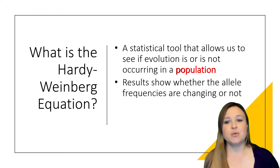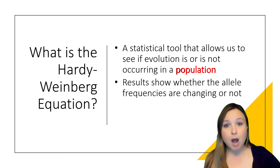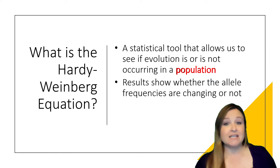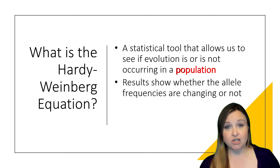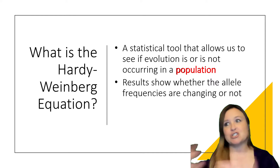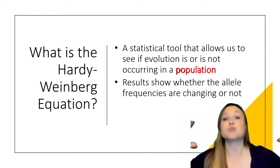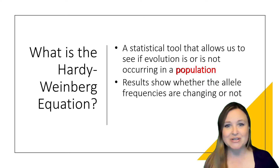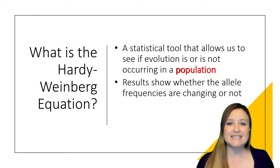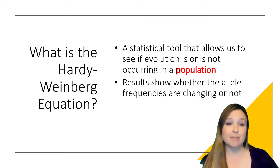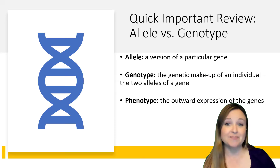Now, I want to highlight that we're talking about a population. We're looking not at one individual tiger and whether that tiger changes over time, but at a population — a group of tigers, humans, or grasshoppers — to see if the alleles in that population change over time.